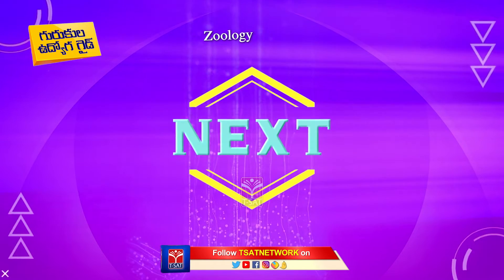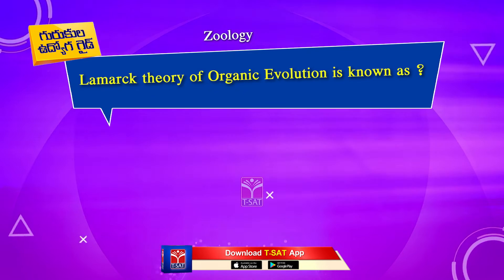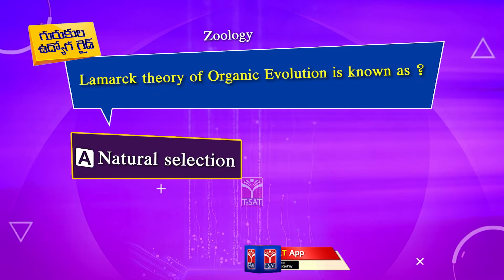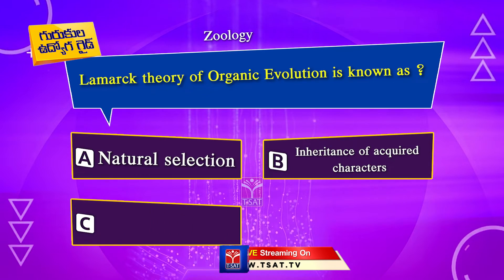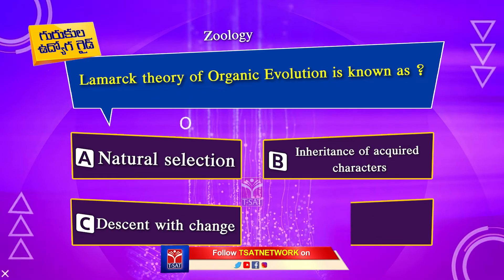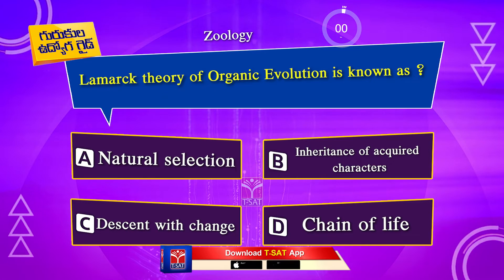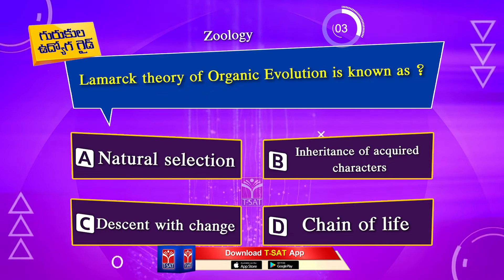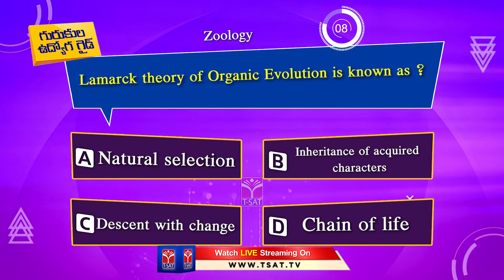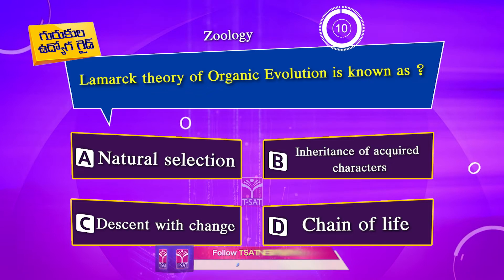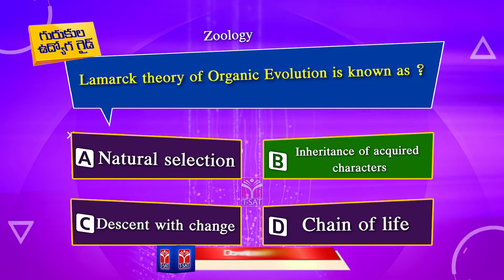Next question. Lamarck's theory of organic evolution is known as: Option A. Natural selection. Option B. Inheritance of acquired characters. Option C. Descent with change. Option D. Chain of life. The correct answer is Option B. Inheritance of acquired characters.